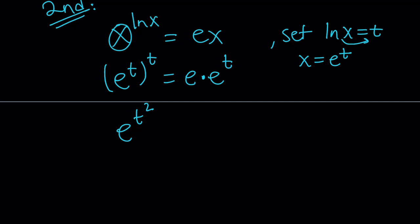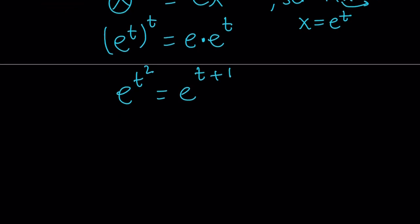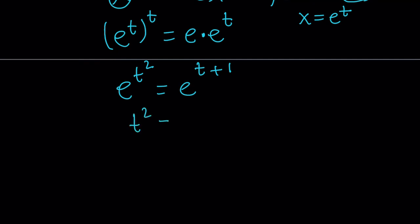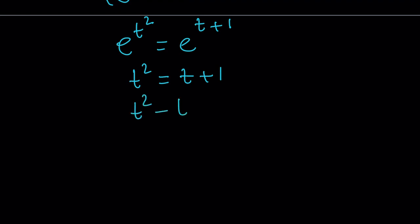This becomes e to the power of t squared. And the right-hand side becomes e to the power of t plus 1. The bases are equal, so are the exponents. So we can get rid of the bases and write this as t squared equals t plus 1, hence the golden ratio comes up again. So we can write this as t squared minus t minus 1 equals 0.